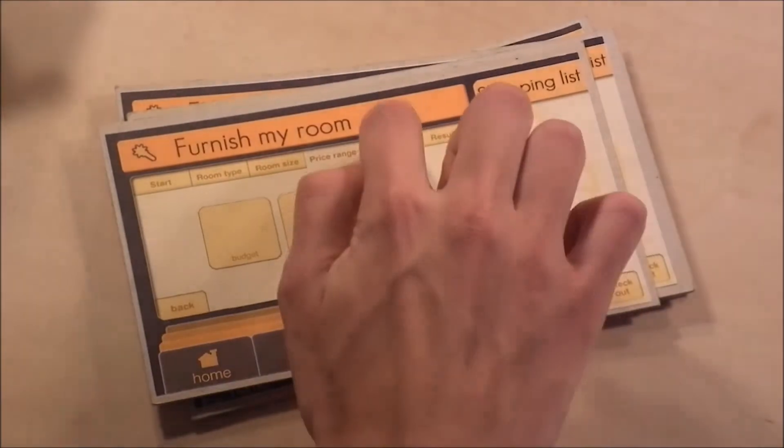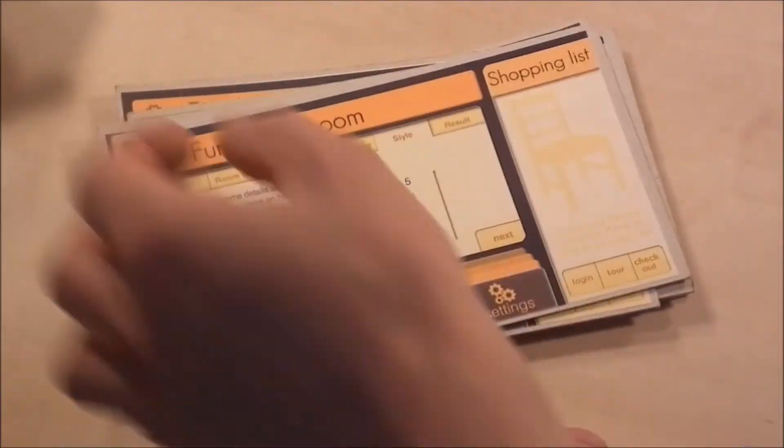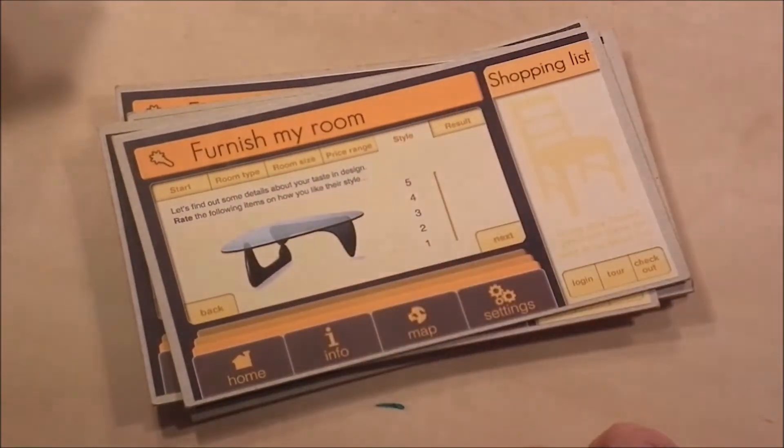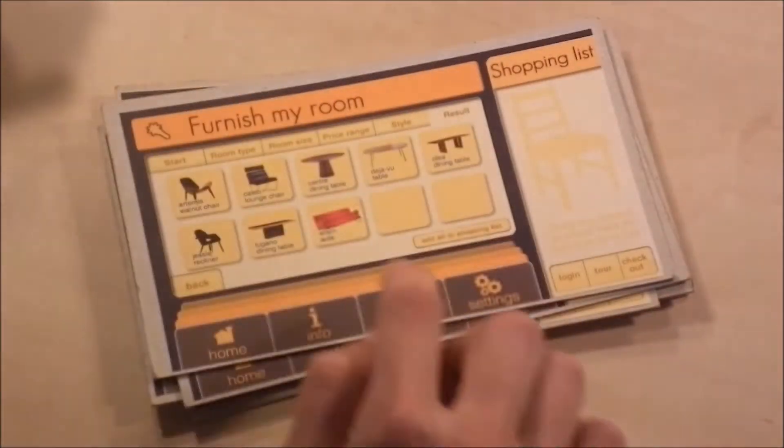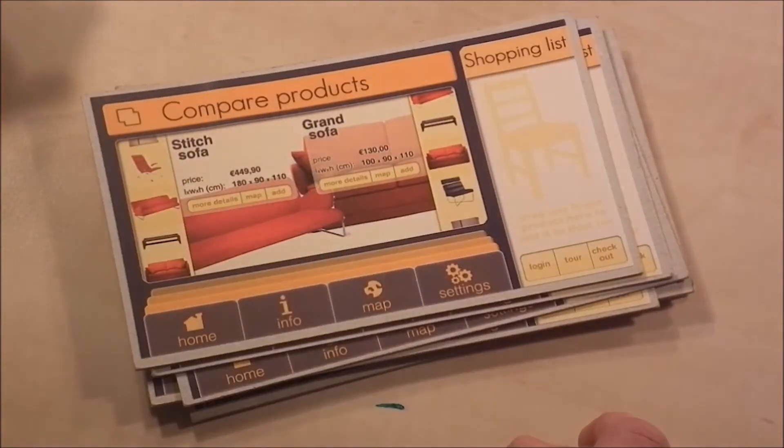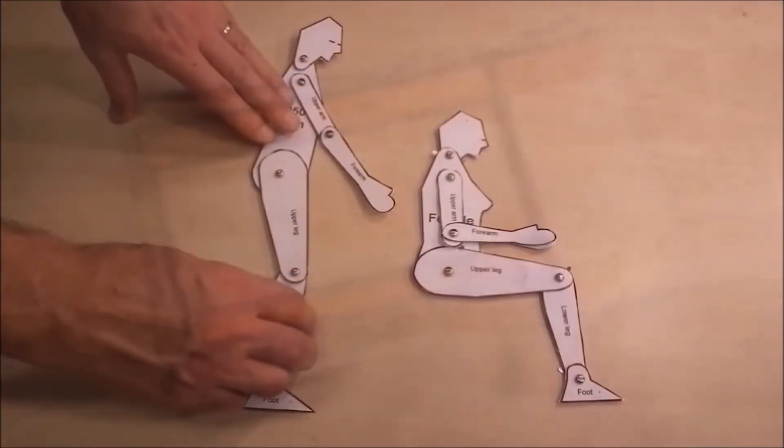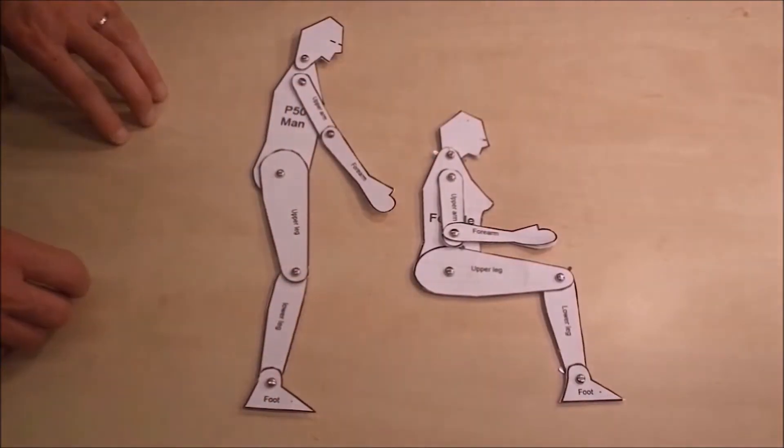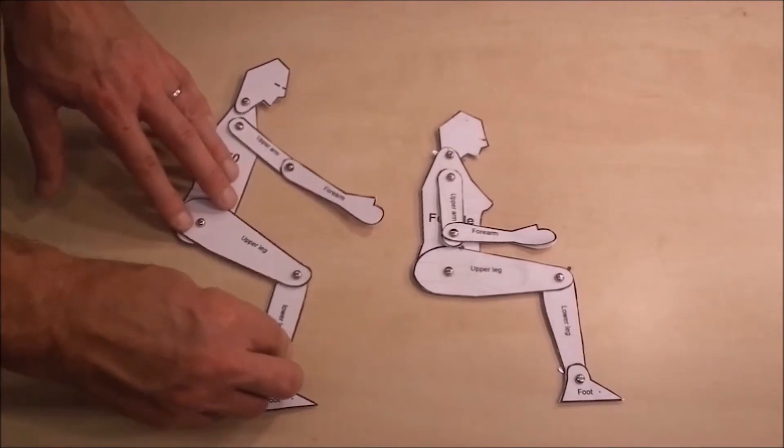In an early stage, visual two-dimensional interfaces can be prototyped out of paper or cardboard sheets that can be positioned in layers to simulate the alternating screens. For prototypes that aim to study the physical interaction, body measures, locomotion, and tactile possibilities especially need to be taken into account.